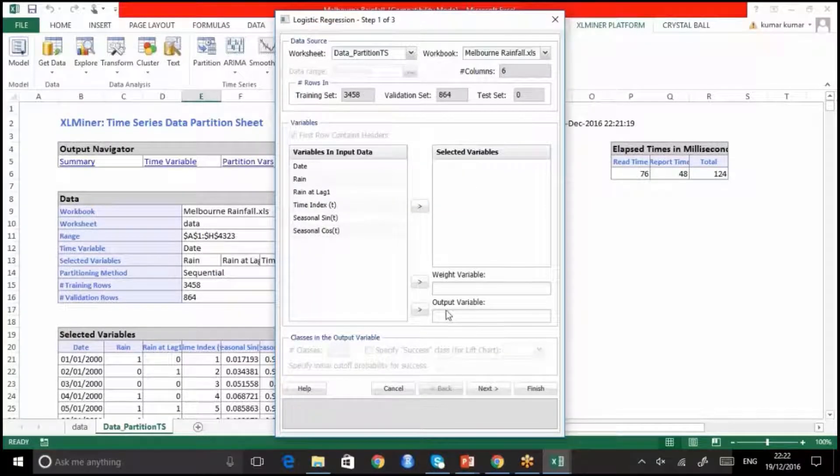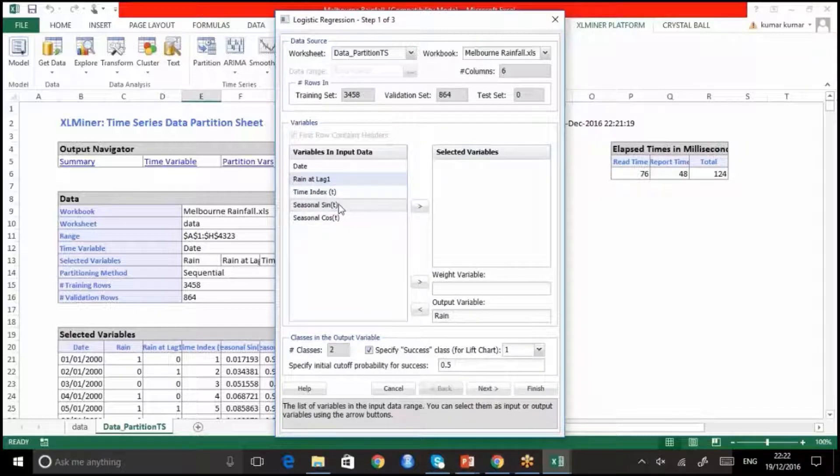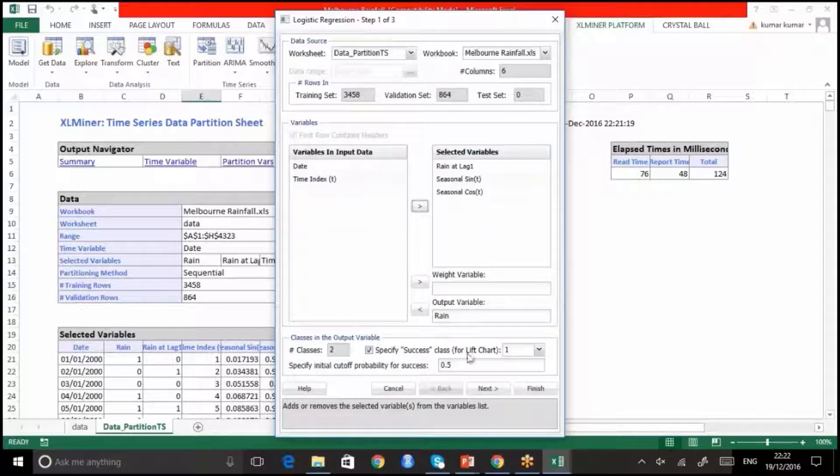We need to choose the output variable. Output variable of interest is rain. And we want to choose all of the other variables. Not the time variable of course. We need these three variables. Click on next. And we are specifying the cutoff value as 0.5. Here we have only two classes that we are dealing with. Will it rain or will it not rain?